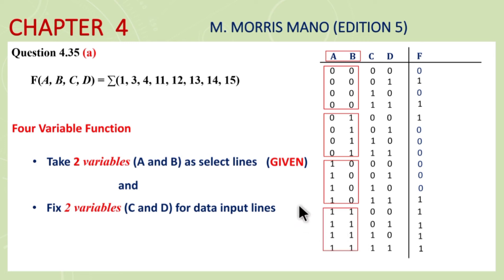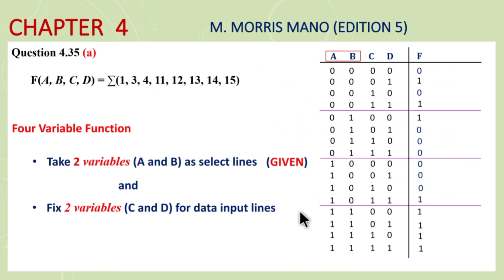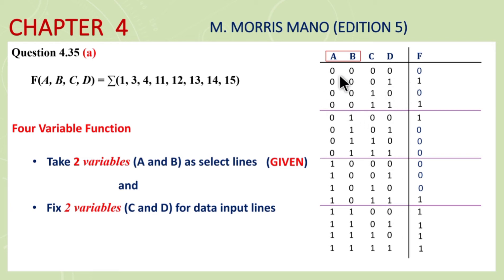So you can say that if we take two select lines and two data lines, the inputs group into fours. If your select lines are two and there are two data input lines, groups of four will be formed. If we look at this entire group, the select line AB is common — zero zero — so for each select line combination, we write the function in terms of data lines C and D.